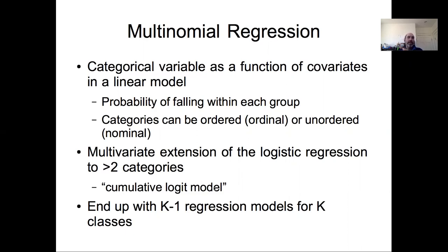We're going to write down a series of logistic regressions to describe these different cases. In the end, if we have k different classes we're trying to classify outcomes into, we're going to end up with k minus 1 regression models, because there's a sum-to-one constraint on these probabilities. By analogy with our logistic model, we have two classes of outcomes but only one regression model because the probability of falling in the other class is just 1 minus the probability of falling in the first class.